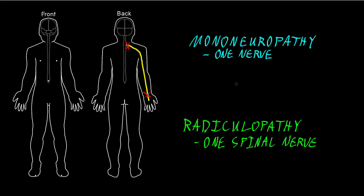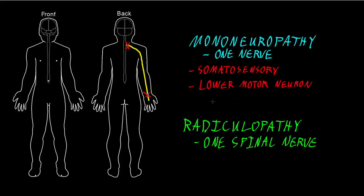With both mononeuropathy and radiculopathy, we can see similar types of abnormalities related to the types of axons traveling in the nerves. We may see somatosensory abnormalities, lower motor neuron abnormalities, and theoretically autonomic abnormalities — though autonomic changes are usually absent or very subtle with common mononeuropathies and radiculopathies, probably because of overlap from other nerves and other spinal nerve levels.